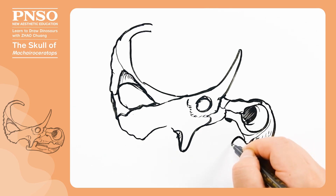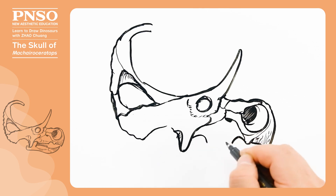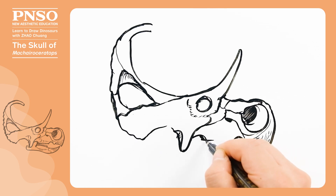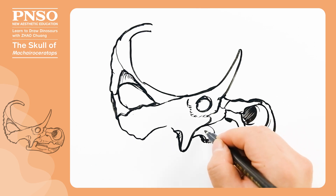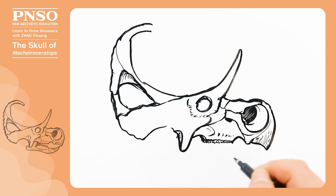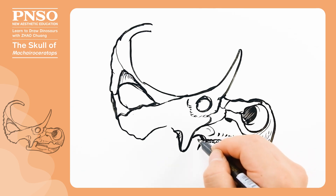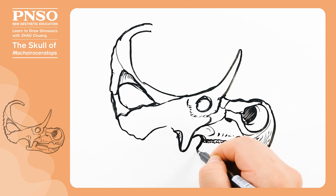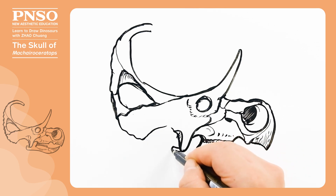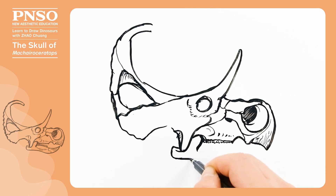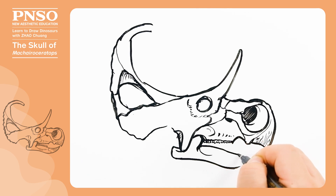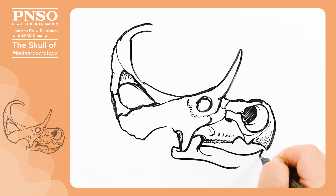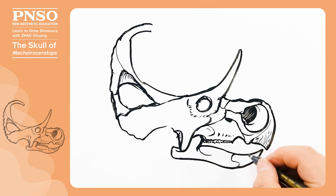Next, let's draw the maxilla and mandible, as well as the tiny teeth on them. Located at the front of the mandible was a keratinous beak.